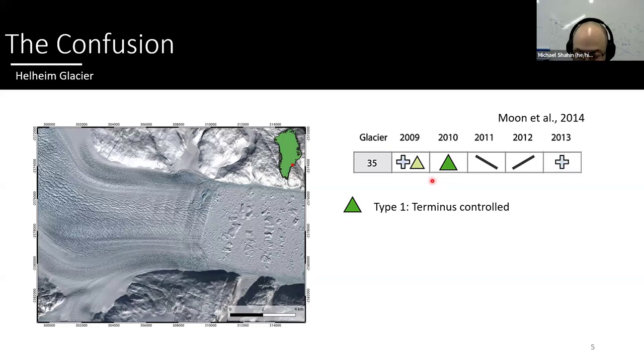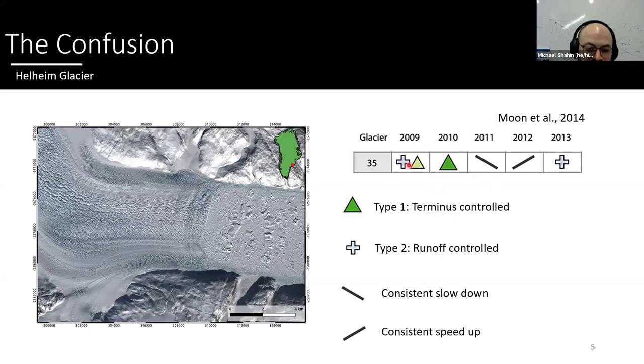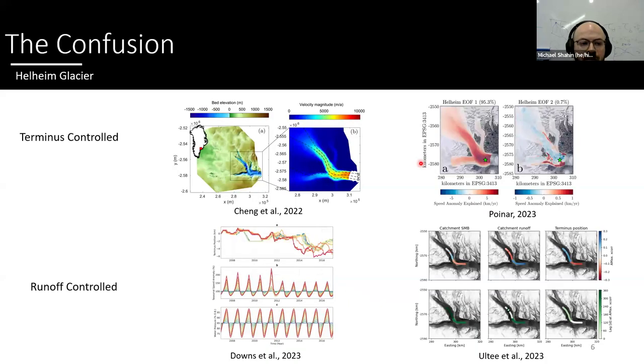So for example, the green triangles represent the terminus control. So think of more of the ocean hypothesis. The crosses represent the runoff control. So think of more like bed processes. And the downward slope is just a consistent slowdown. And the upward slant is the consistent speed up. And in 2009, they couldn't tease apart what dominant signal was. So they just simply put both. And to compound this confusion, even more at Helheim Glacier, there's many new studies that came out that both have different results, even using similar methods.